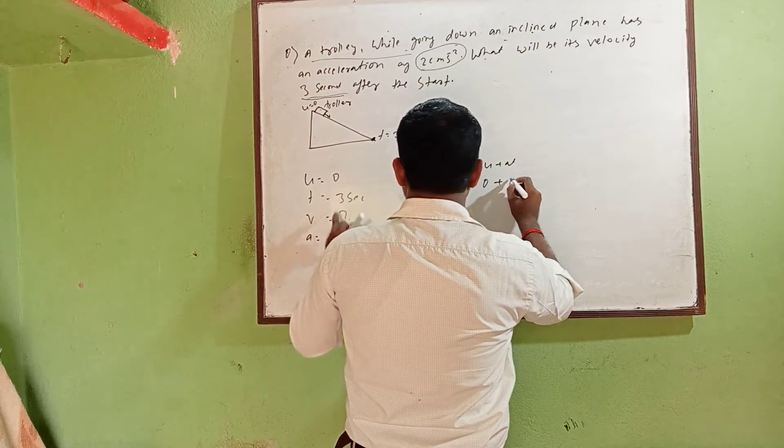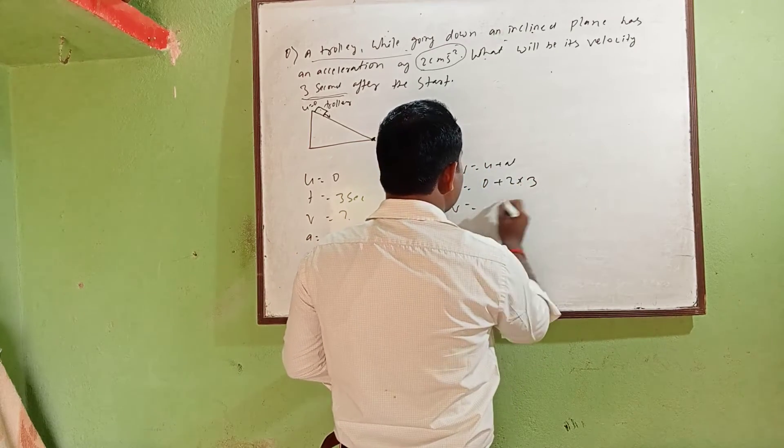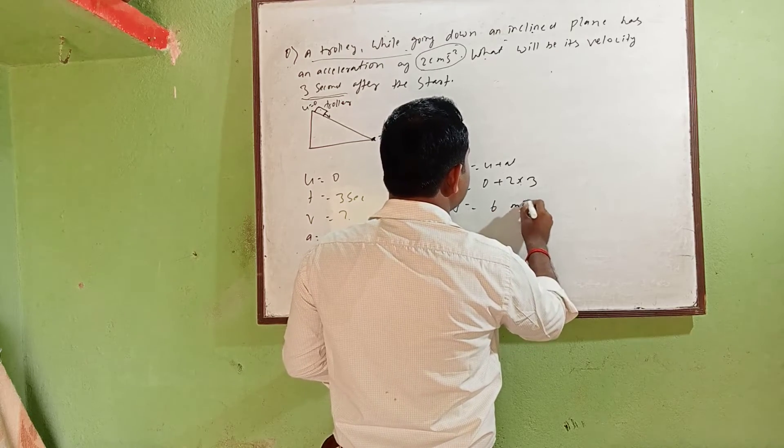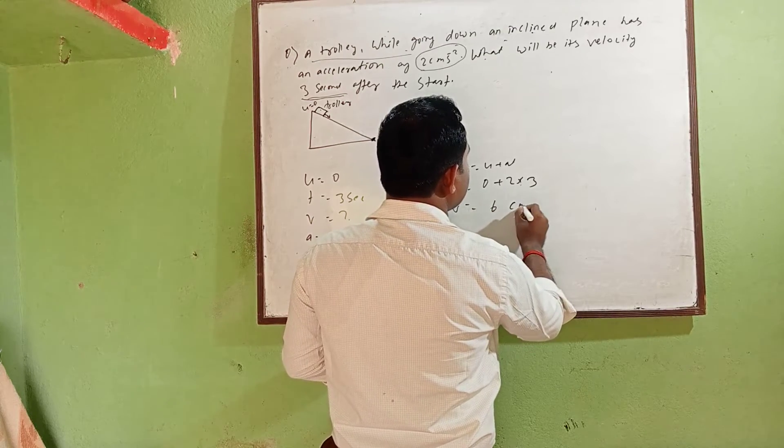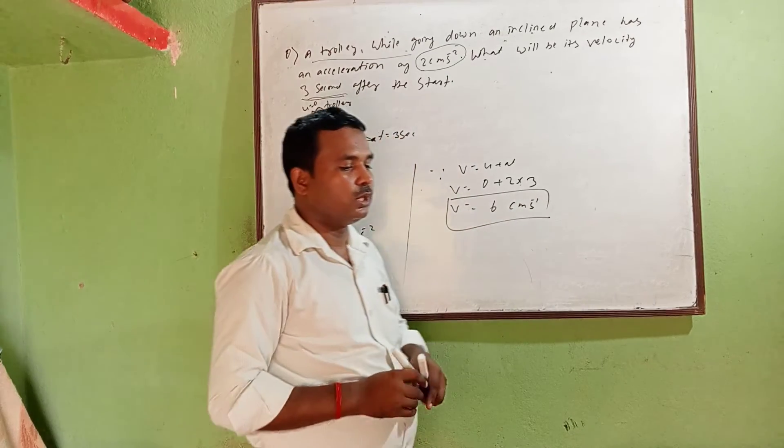So v is equal to three into two, which is six. The units here will be centimeter per second. So you got the value - v is equal to six centimeter per second.